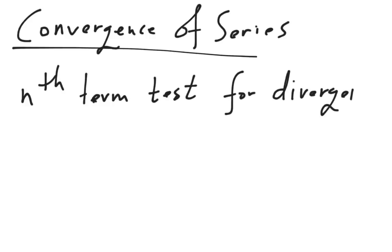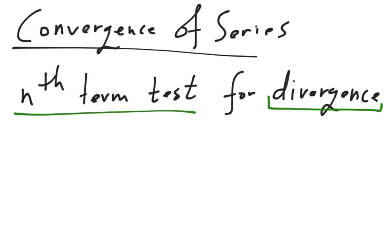This is a fairly simple test to do, but it only tests for divergence. When we start to talk about convergence of series, most of them have names, and the name of this one is called the nth term test. If you go up to people in the mathematical community who know sequences and series and say 'nth term test,' they'll know what you're talking about. They're all basically tests, because you're testing for convergence or divergence.